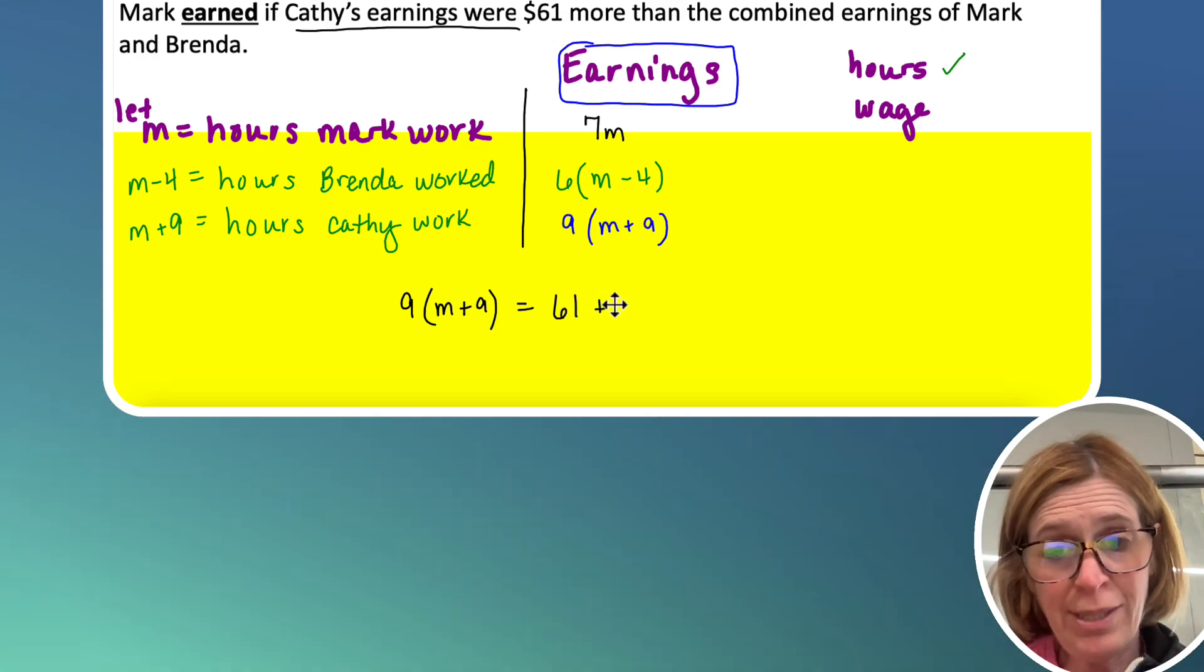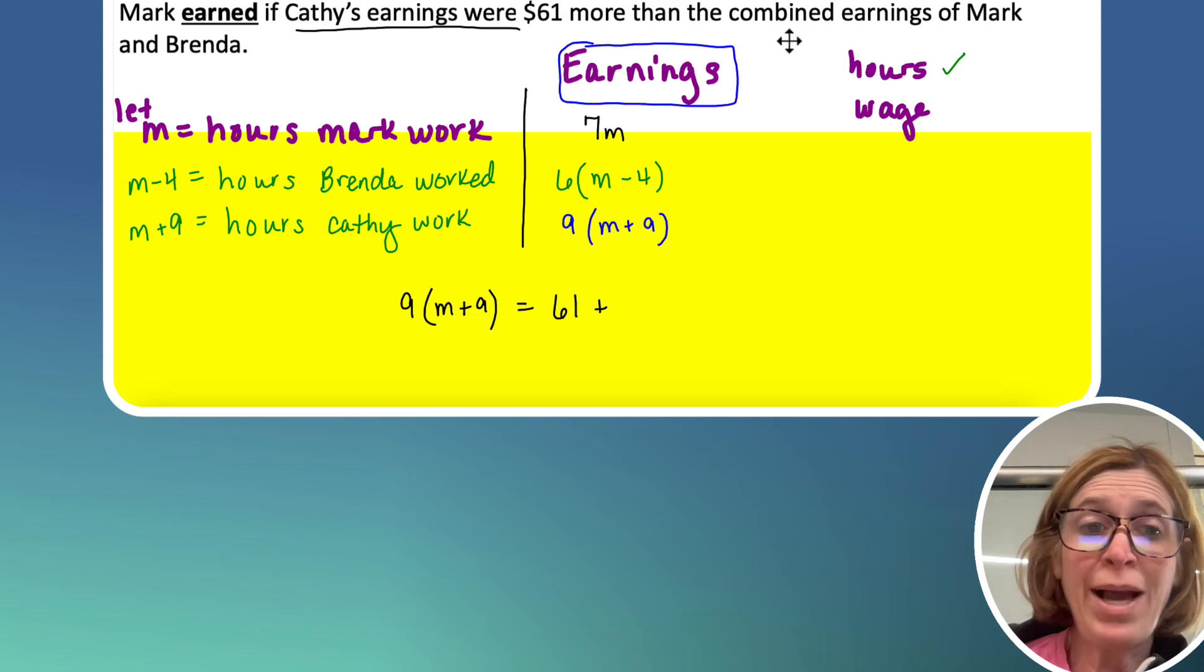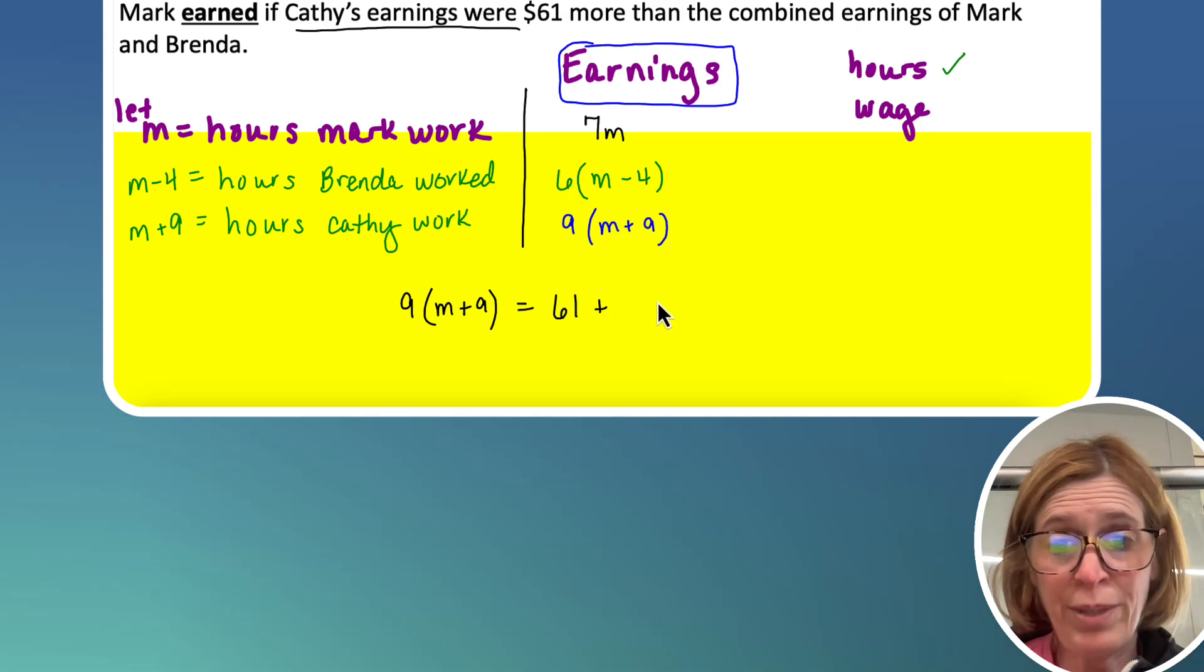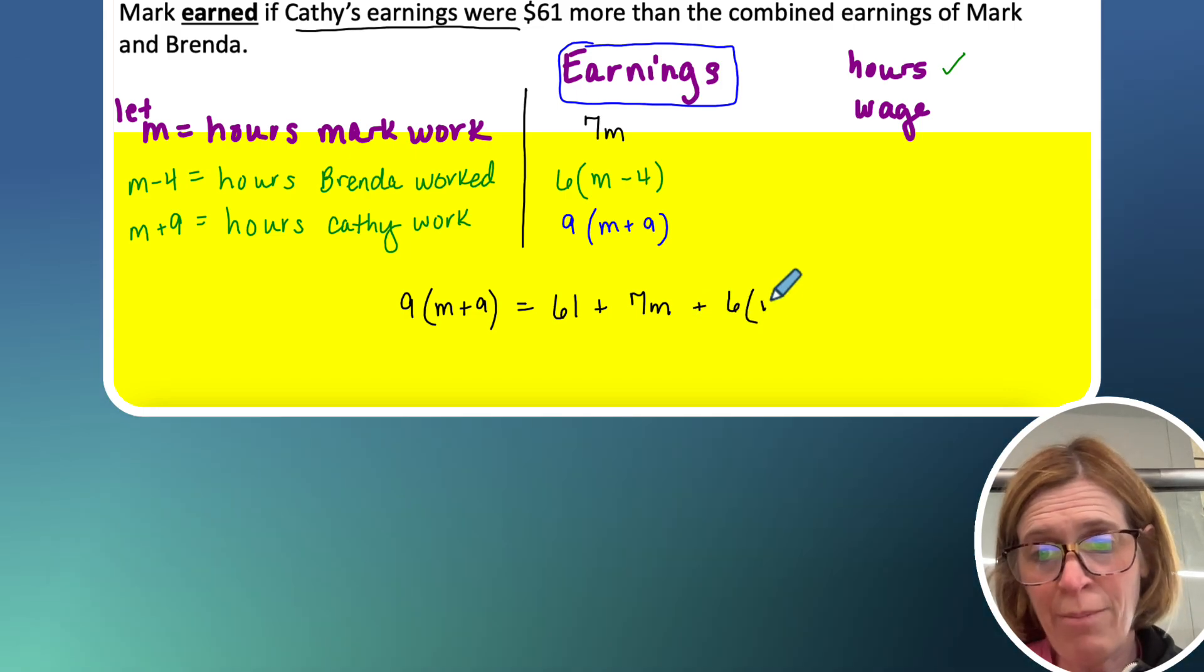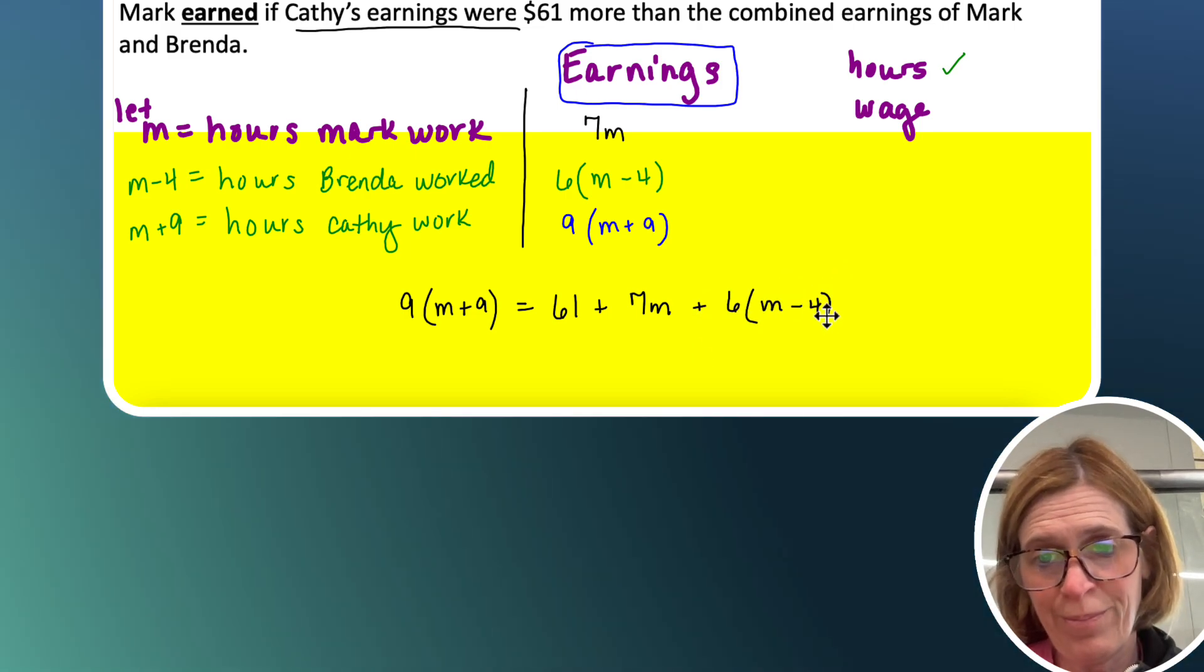so 61 plus the combined earnings of Mark and Brenda. So that would be seven M, combined means add them, combined together, plus six times M minus four.